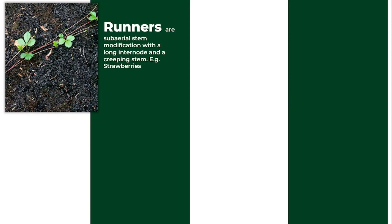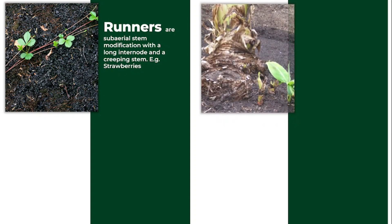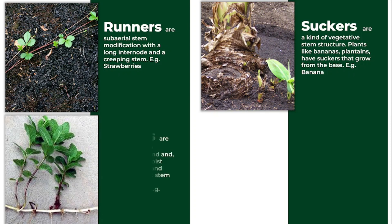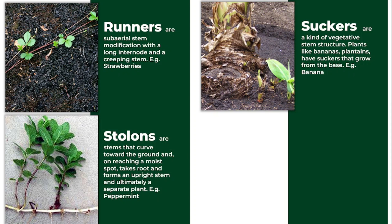Now let's look at some examples of creepers. First, we have the runner. Runners are sub-aerial stem modifications of long internodes and creeping stems, and a good example is the strawberry. Then we have the suckers, which are modified stem structures found in plants like bananas, plantains, and so on.